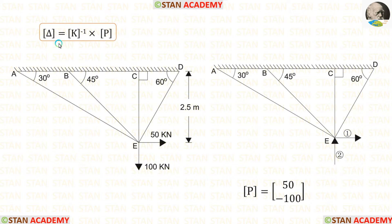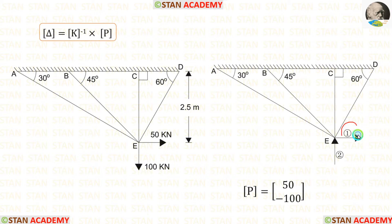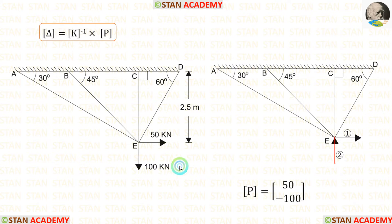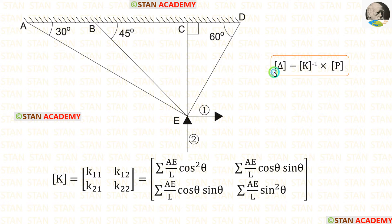The formula to find displacement is the K matrix inverse multiplied by the P matrix. First let us find the P matrix — it contains the forces acting in the coordinate directions. In the first coordinate we have a point load of 50 kN. In the second coordinate we have a point load of 100 kN. The coordinate acts upwards but the point load acts downwards, so we add a negative sign.